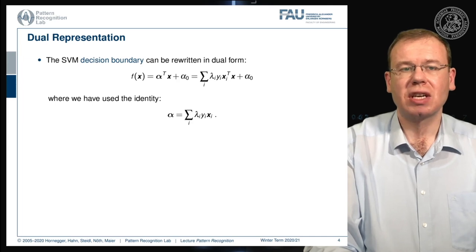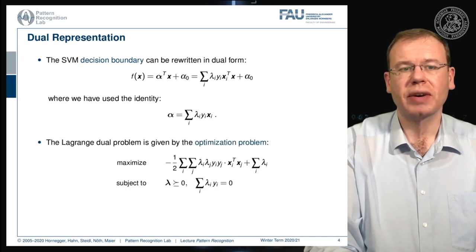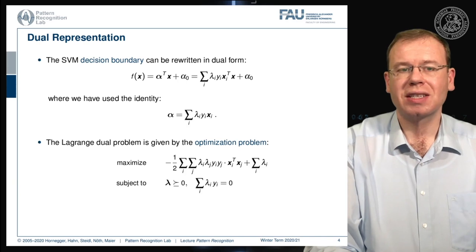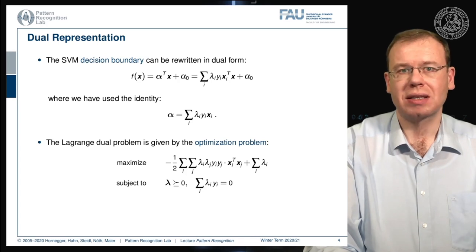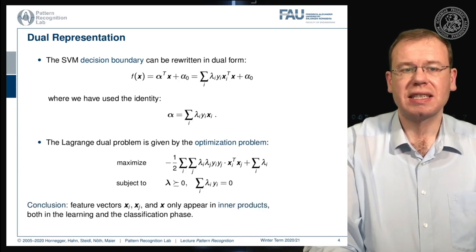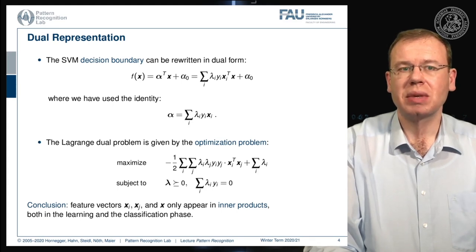In this particular optimization problem we've seen that the feature vectors only appear as inner products. So the conclusion is that we only have inner products here. This can be applied in both the learning and the classification phase.